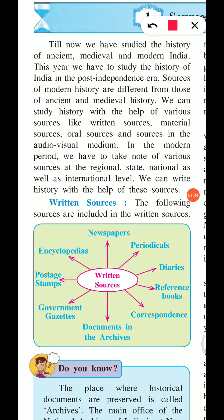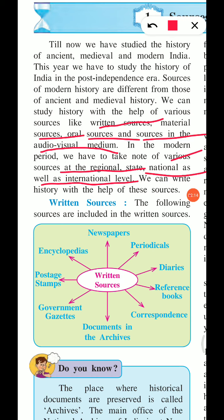There are some other sources found in the history of modern history. We can study history with the help of various sources like written sources, material sources, oral sources, or sources in the audio-visual medium. With different sources we will get information in this period in written form, material form, oral form, or audio-visual form. In the modern period we have to take note of various sources at the regional, state, national, as well as international level.